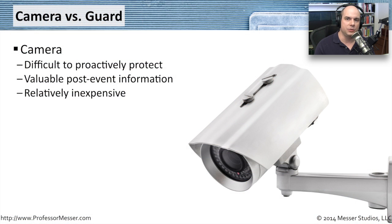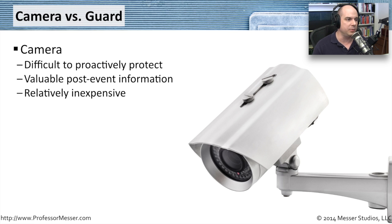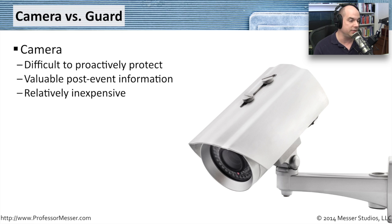When we think about protecting our assets, we're often in a position where we need to consider adding a technology solution and a non-technology-based solution. A good example of detection versus prevention comes into play when you're trying to protect a certain area of your organization. A good example is deciding whether to put a camera here or put a physical guard in place. A camera is very easy to install and relatively inexpensive.